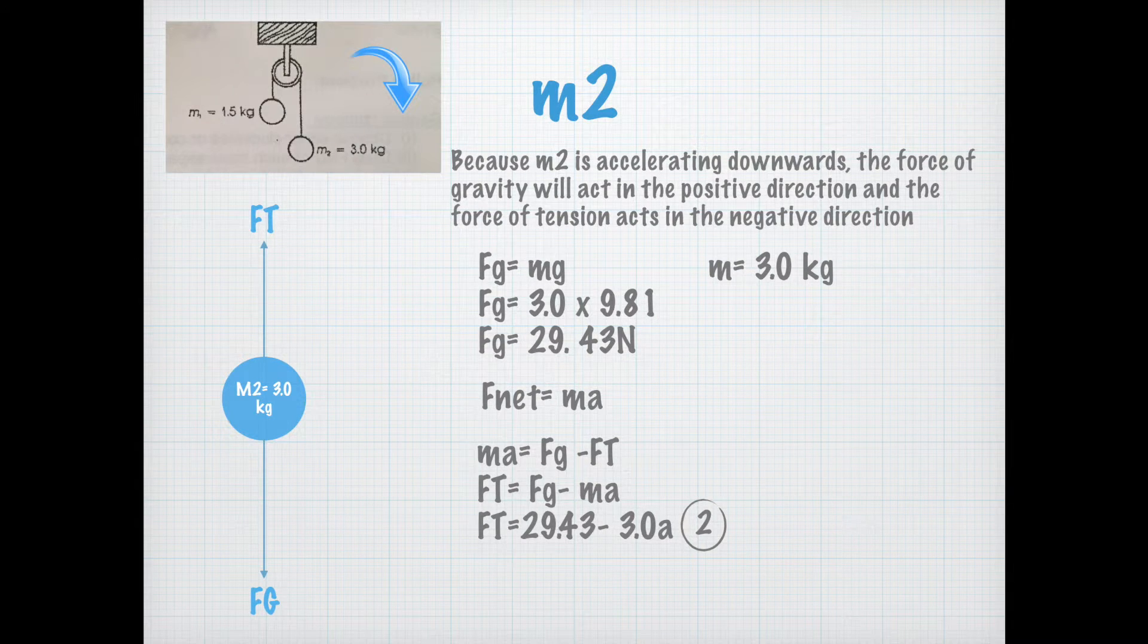Now we're going to take a look at mass 2. Because mass 2 is accelerating downwards and according to our clockwise motion being positive, we can conclude that the force of gravity will now act in the positive direction and the force of tension acts in the negative direction.